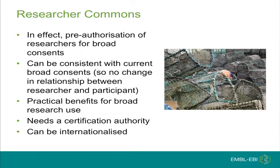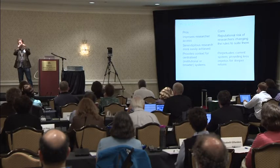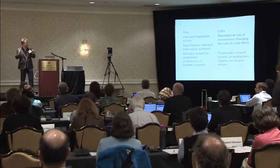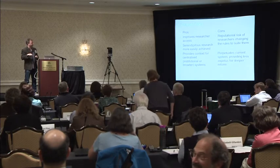Pros: improves researcher access, serendipitous research is more easily achieved, and provides a context for centralized or broader institutional systems. The cons: there's a reputational risk of this seeming like researchers are bending the rules inappropriately. I think that's an education and presentation issue rather than a real issue. When you present this, it has to start from the correct point of saying we want to maximize utility and we're not changing how researchers interact with this data — we're just making it easier for utility to come out of it. It perhaps perpetuates the current system to some extent.